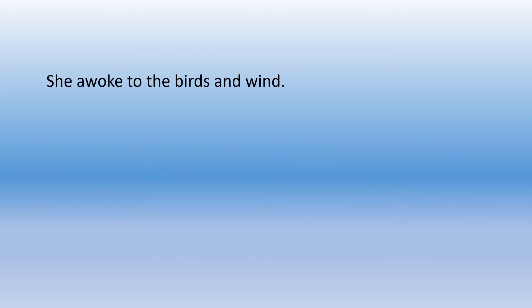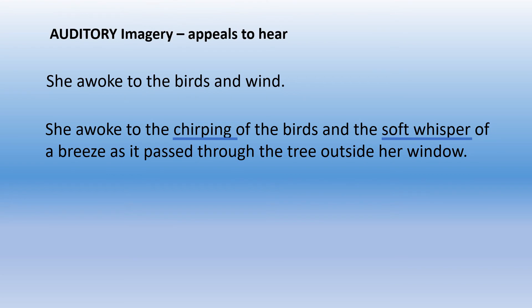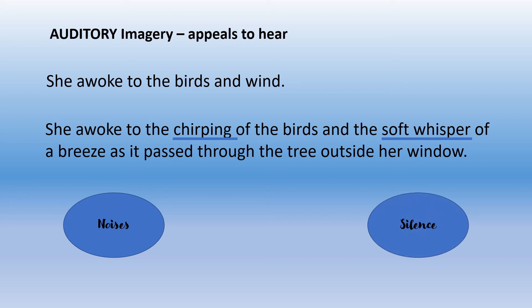Another example: 'She awoke to the birds and wind.' Let's add descriptive words: 'She awoke to the chirping of the birds and the soft whisper of a breeze as it passed through the trees outside her window.' The words 'chirping' and 'soft whisper' are a lot more active words which help portray images that we can hear. This appeals to our sense of hearing, and this is what we call auditory imagery. Auditory imagery may include sounds, noises, and even silence or lack of noise — with silence describing a peaceful calm.